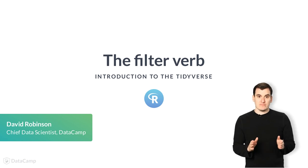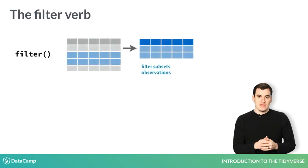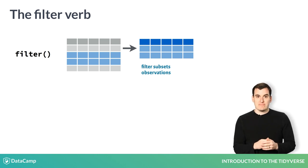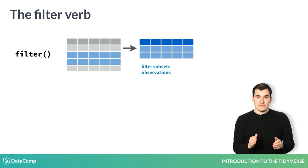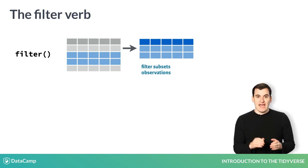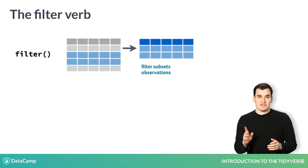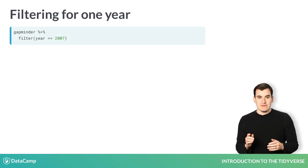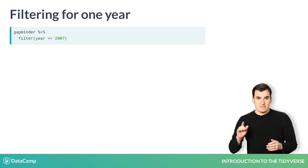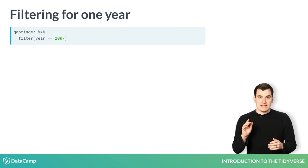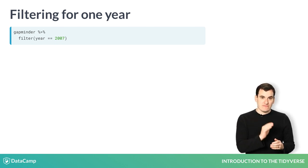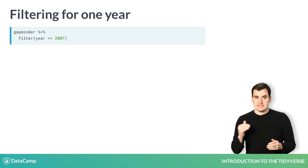The first verb you'll use is filter. You use filter when you want to look only at a subset of your observations based on a particular condition. Filtering data is a common first step in an analysis. Every time you apply a verb, you'll use a pipe. A pipe is a percent greater than percent — it says take whatever is before it and feed it into the next step.